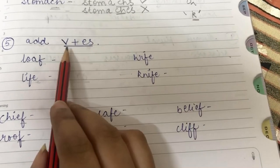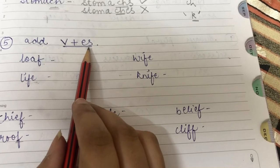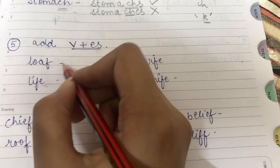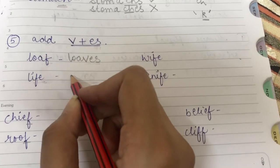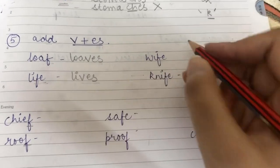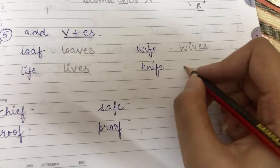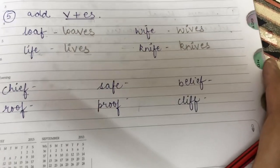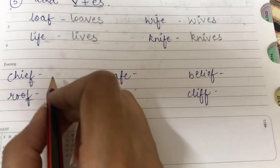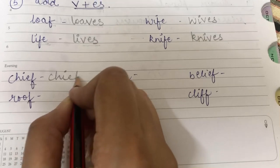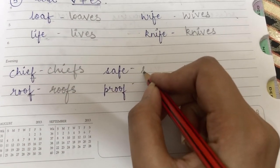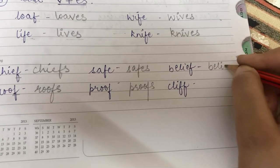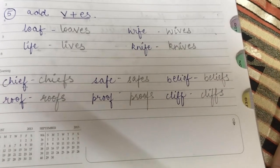The fifth rule is adding VES. Words that end with F or FE change to VES. Loaf becomes loaves. Life, lives. Wife, wives. Knife, knives. However, not all words follow this rule — some only add S. Chief, chiefs. Roof, roofs. Safe, safes. Proof, proofs. Belief, beliefs. Cliff, cliffs.